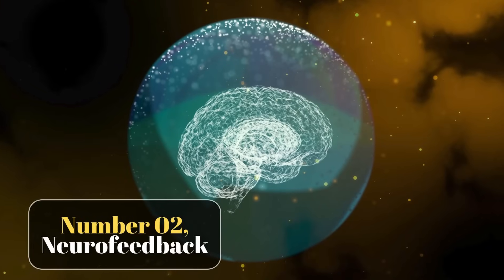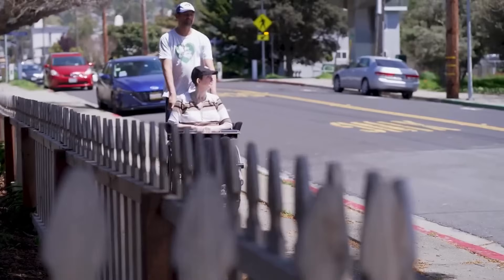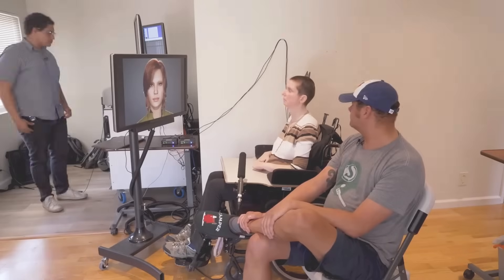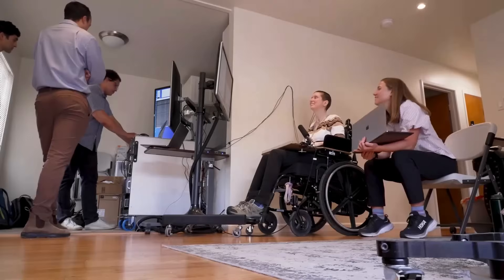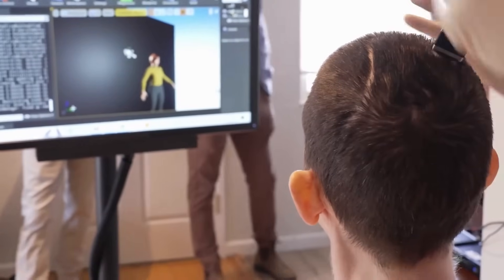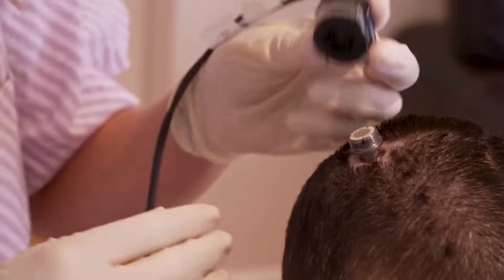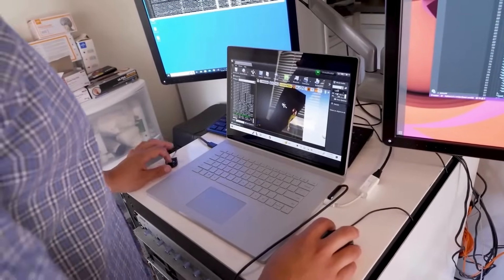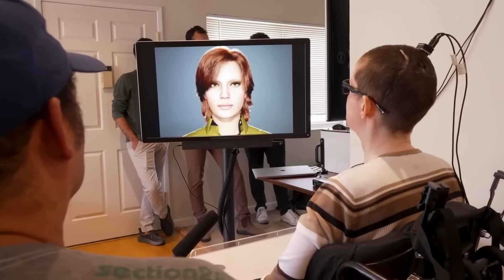Number 2. Neurofeedback. Neurofeedback is a technique that uses real-time monitoring of brainwave activity to help individuals control their brain patterns. It involves placing sensors on the scalp to measure the electrical activity of the brain, which is then displayed on a screen. This feedback helps users understand their mental states, such as focus, relaxation, or stress, and teaches them how to adjust their brainwaves intentionally.